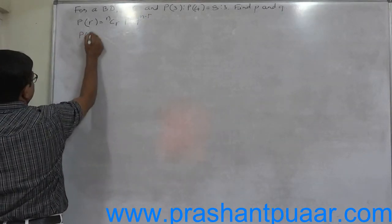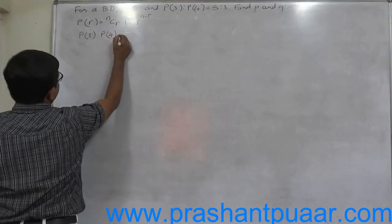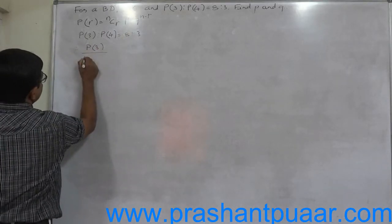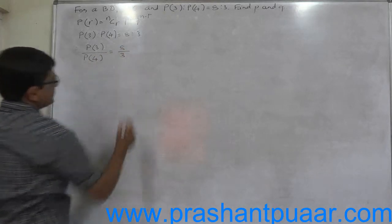P of 3 successes to P of 4 successes equals 8 to 3, that means P of 3 to P of 4 equals 8 to 3, that is the ratio.